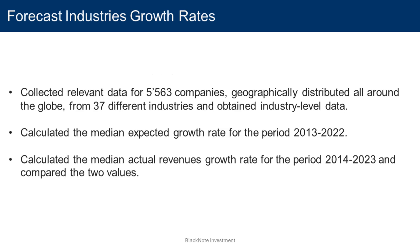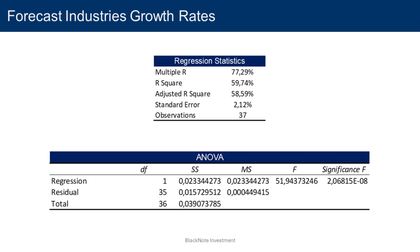I collected relevant data for more than 5,500 companies geographically distributed all around the globe from 37 different industries, and obtained industry-level data. Using the same approach as before, I calculated the median expected growth rate for the period 2013–2022 as well as the median actual revenues growth rate for the period 2014–2023 for each industry and compared the two values. This time the reliability of the model is on a completely different level: the correlation is a staggering 77 percent and the R-squared significantly improved. The standard error sits at 2.1 percent — still not close to zero, but considerably more manageable than before.